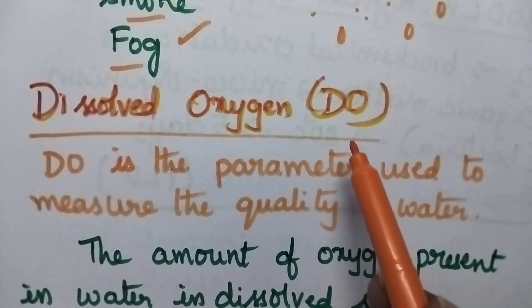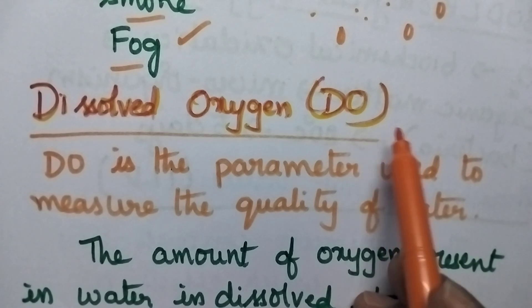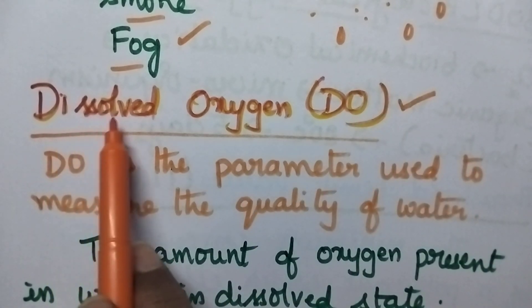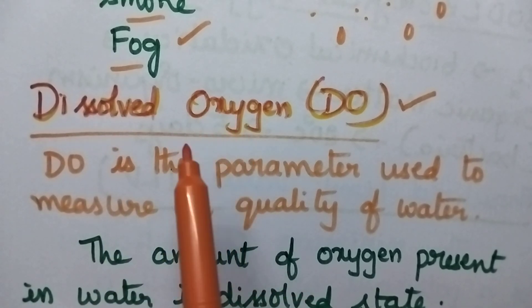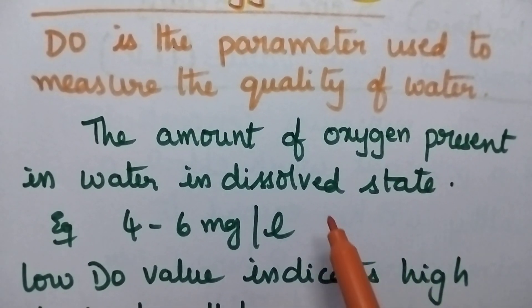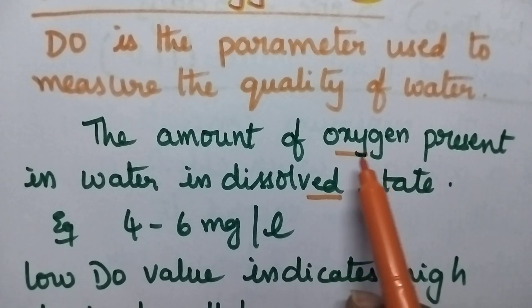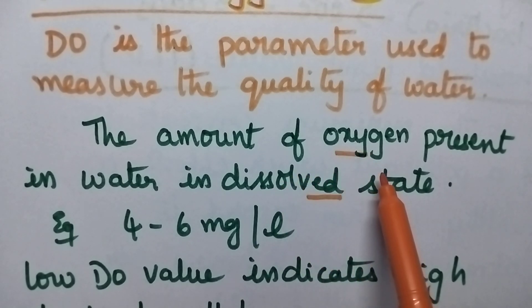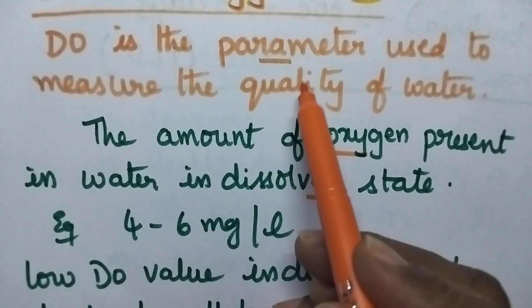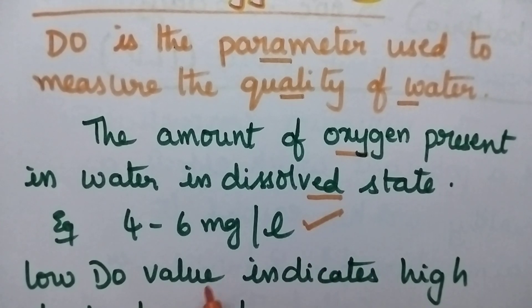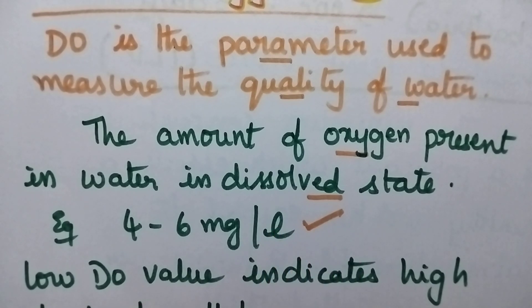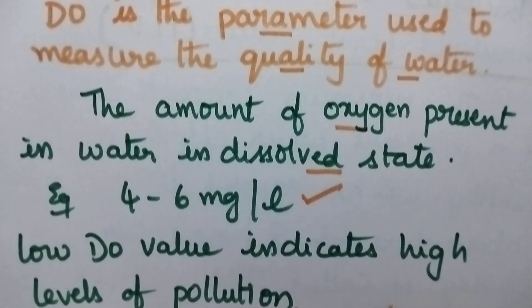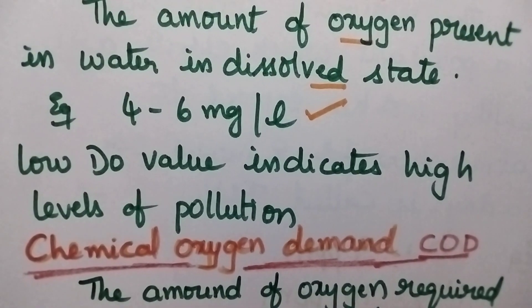Now we will discuss important terms: DO, COD, BOD, and TLV — that is threshold limit value. DO means dissolved oxygen — the amount of oxygen present in water in the dissolved state. It is the parameter used to measure the quality of water. Ordinary water contains 4 to 6 mg per litre of dissolved oxygen. Low levels of DO indicate high levels of pollution.